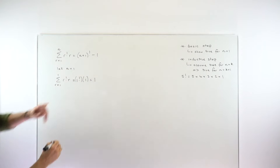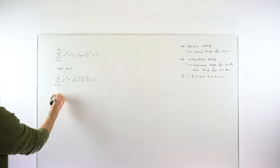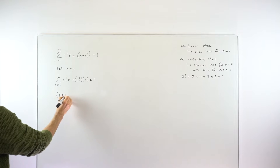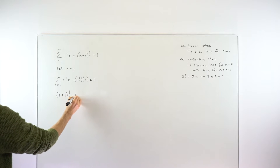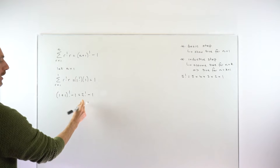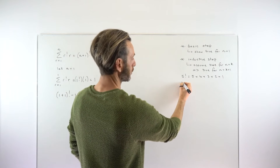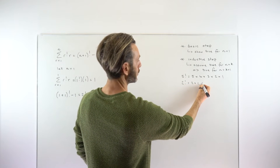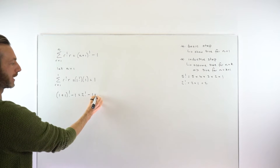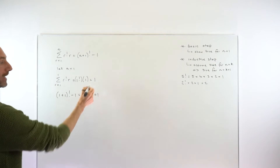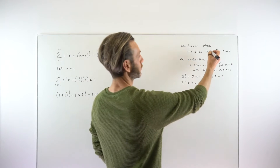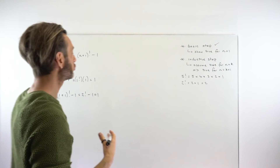We want to show that's equal to the right-hand side. The right-hand side when n is 1 gives us 1 plus 1 factorial minus 1. 1 plus 1 is 2, so that's 2 factorial minus 1. 2 factorial is just 2 times 1, which equals 2. So that's 2 minus 1, which is 1. So these are equal. That completes the basic step — we've shown that for the first case, this result is indeed true.